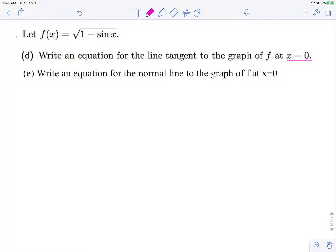The first thing we need is to find y1 that goes along with x1. So y1 equals f of 0, which is square root of 1 minus sine of 0, which is square root of 1 minus 0, square root of 1, which is 1. So we have our x1 and y1.